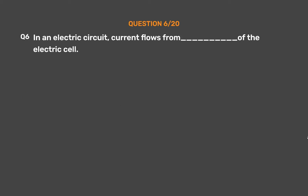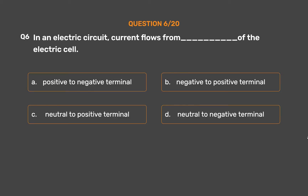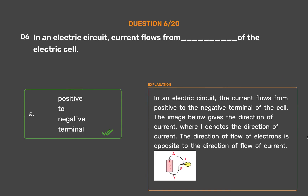Question number 6. In an electric circuit, current flows from blank of the electric cell. Option A: Positive to negative terminal. Option B: Negative to positive terminal. Option C: Neutral to positive terminal. Option D: Neutral to negative terminal. The correct answer is Option A, Positive to negative terminal. In an electric circuit, the current flows from positive to the negative terminal of the cell. The direction of flow of electrons is opposite to the direction of flow of current.